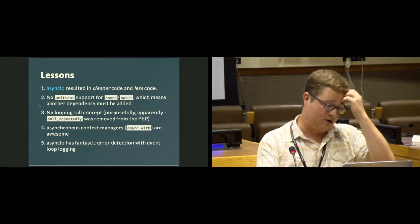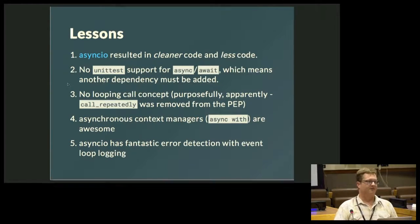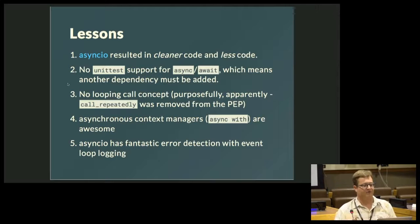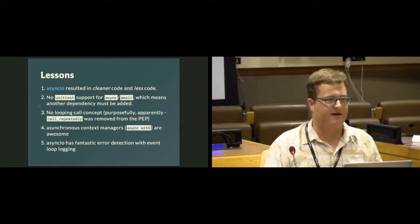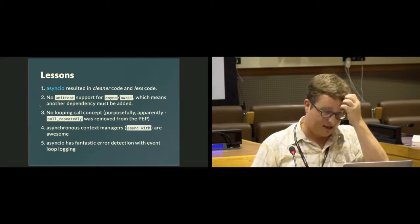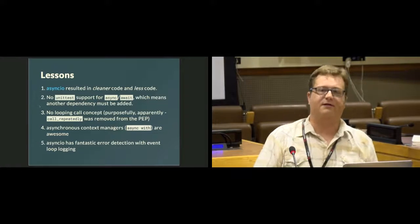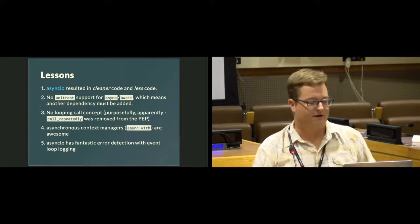Some lessons: asyncIO resulted in cleaner code and less code. Unfortunately there's no unit test support for async or await, which means another dependency has to be added — there are libraries out there to help you test async and await code. There's no looping call concept, which is something I use in a few places from Twisted — where you say do this thing every 10 minutes, and the reactor loop takes care of executing that periodically. This was actually implemented and then entirely removed from asyncIO, which I found to be a pain. Asynchronous context managers like async with are awesome — they allow you to do things like database transactions and they look really pretty.